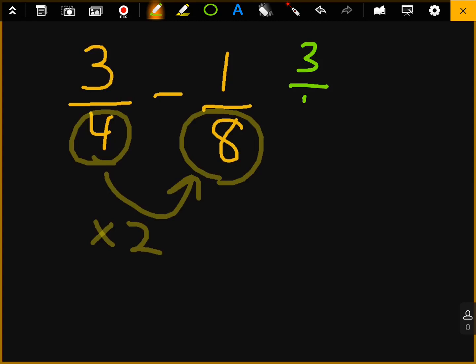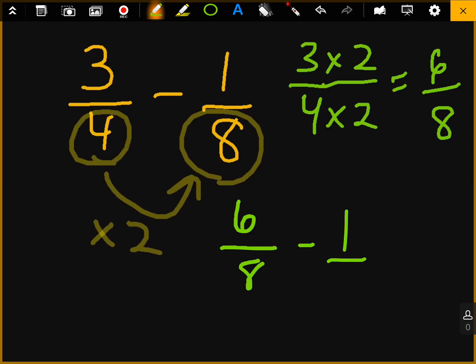Let's take three-fourths. Let's multiply four by two. And whenever we do the bottom, we have to do the top and multiply the three by two. Three times two is six. Four times two is eight. So now we could do six over eight minus one over eight. And that gets us five over eight. And that would be our final answer.